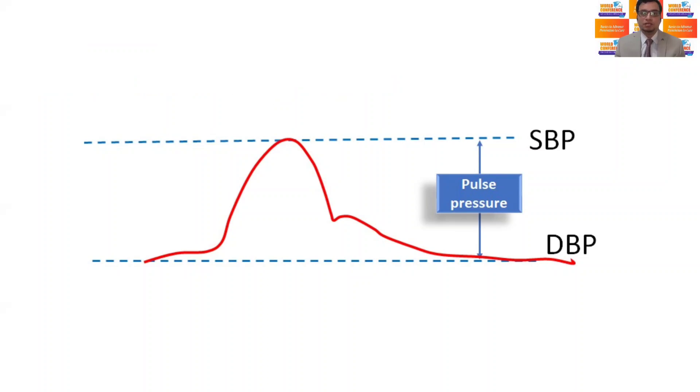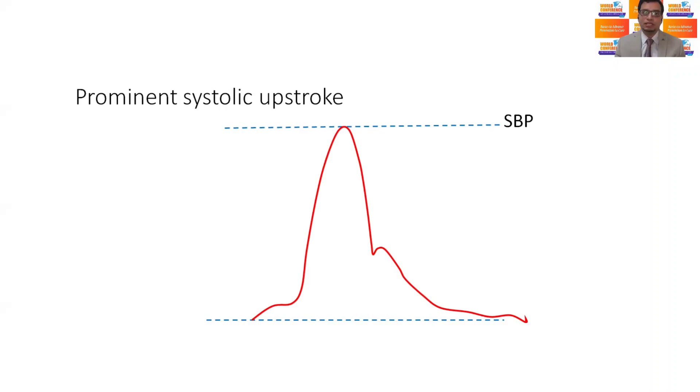In such a case, pulse pressure will be narrow. In an opposite scenario, where systolic upstroke is very prominent, resulting in systolic hypertension, typically seen in the elderly,